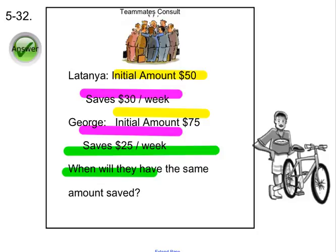I'm going to read it right out of the book. It says Latanya and George are saving up money because they both want to buy new bicycles. Latanya opened a savings account with $50. She just got a job and is determined to save an additional $30 a week.